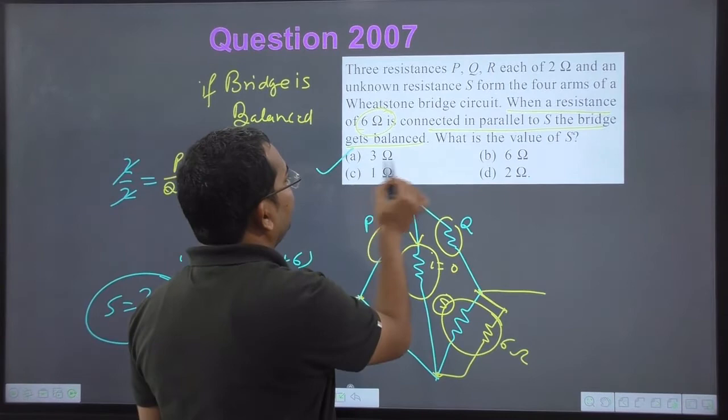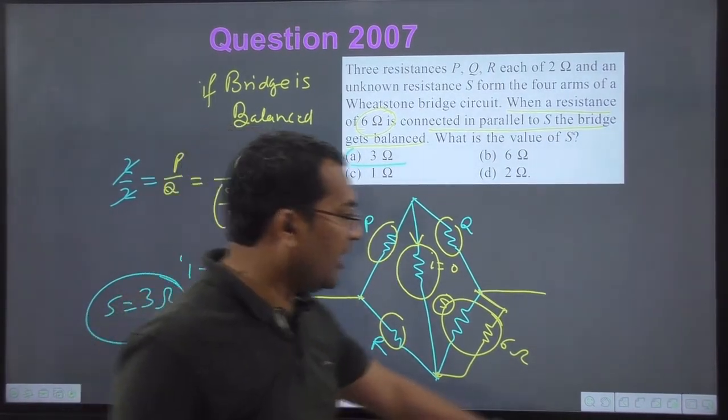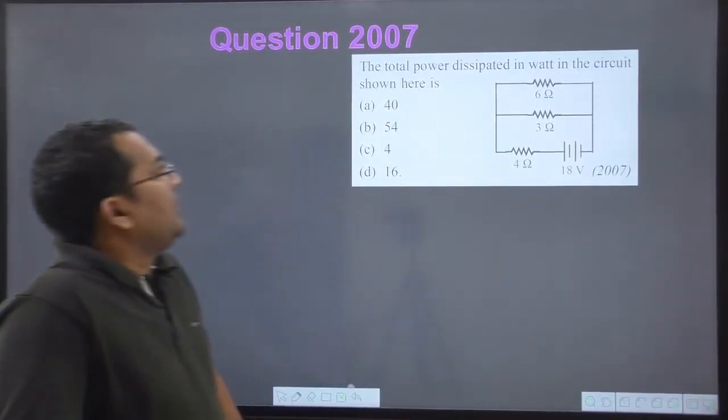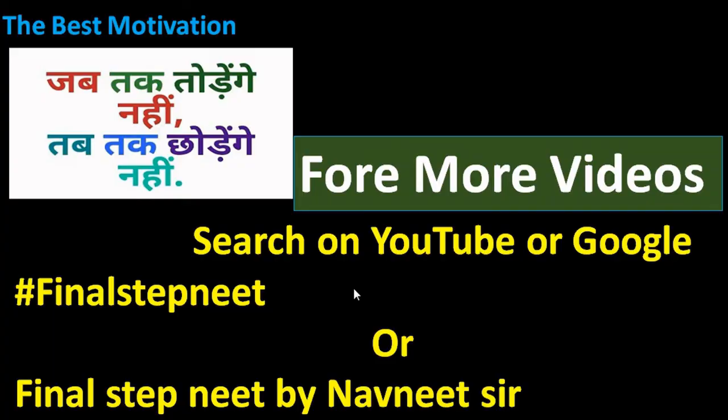If the bridge is balanced, S must be 3 ohm — option A is the correct answer. This was an easy problem. Let's move on, dear students.